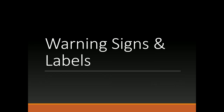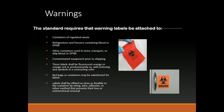Warning Signs and Labels. Warning labels are required on: containers of regulated waste, refrigerators and freezers containing blood or a PIM, other containers used to store, transport, or ship blood or a PIM, and contaminated equipment prior to shipping. These labels shall be fluorescent orange or orange-red, with lettering and symbols in a contrasting color. Red bags or containers may be substituted for labels. Labels shall be affixed as close as feasible to the container by string, wire, adhesive, or other method that prevents their loss or unintentional removal.